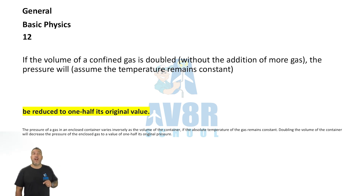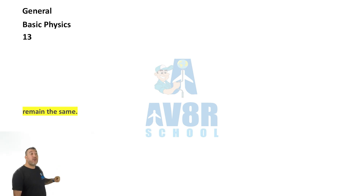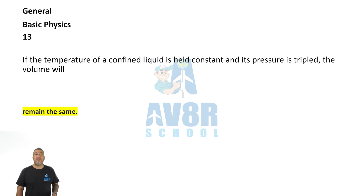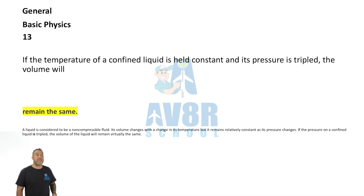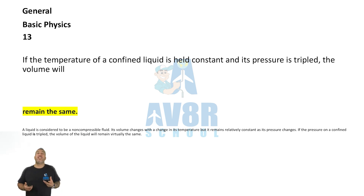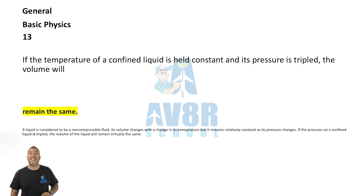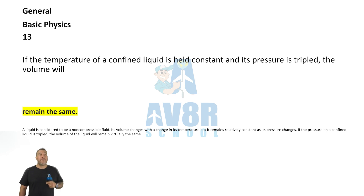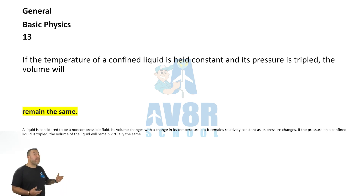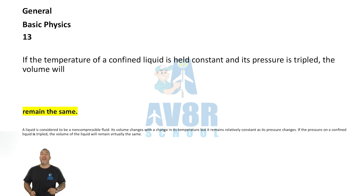Number 13. If the temperature of a confined liquid is held constant and the pressure is tripled, the volume will remain the same. Liquids are incompressible, so the volume will remain the same.